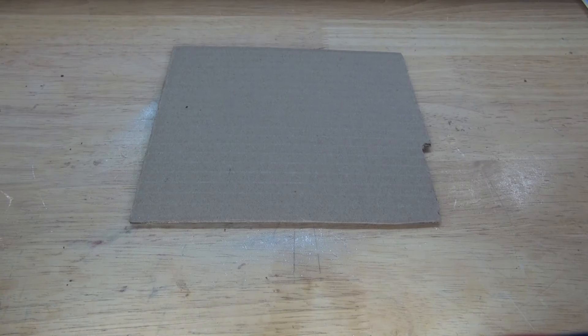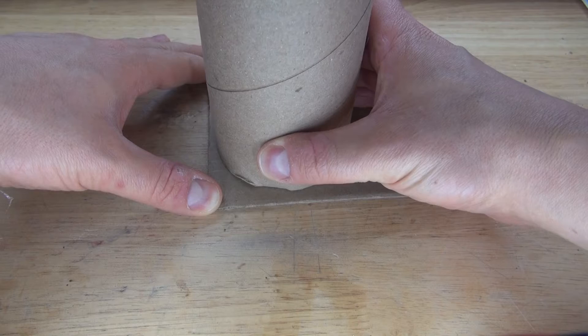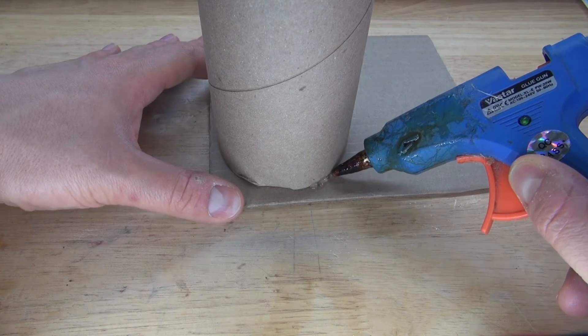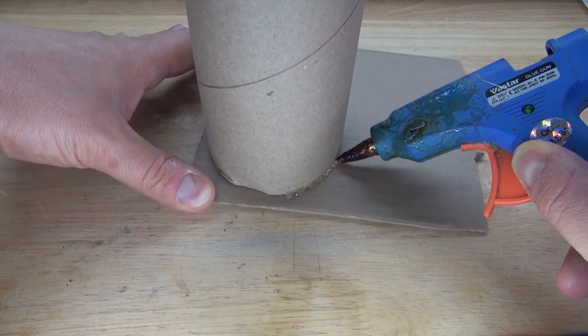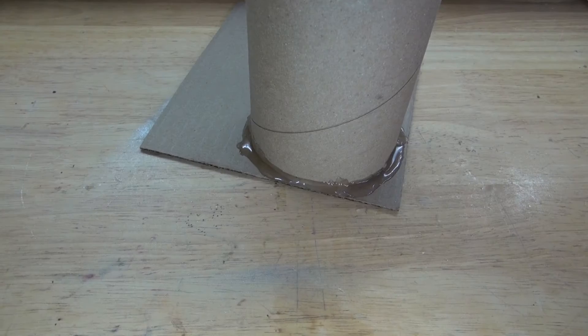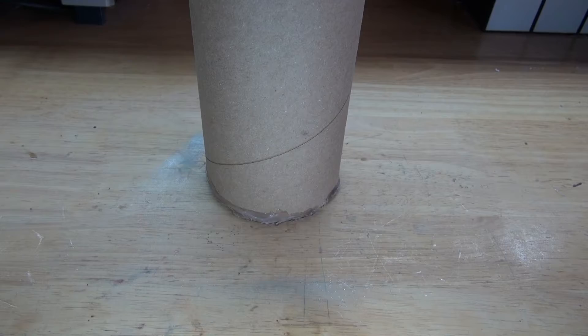First, I'm going to take this piece of cardboard and the cardboard tube. Place it on just like this. Next, take some hot glue and put some hot glue all the way around the perimeter of the cardboard tube. And there we go, glued into place. Next I'm going to take some scissors and simply cut around the perimeter of the cardboard.